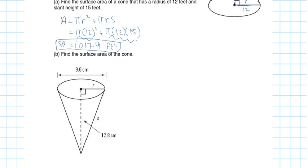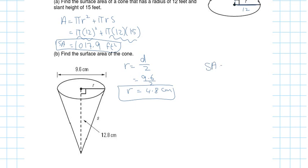Now find the surface area of this cone. In this case they give you the diameter, not the radius. So to find the radius, divide 9.6 by 2, which gives 4.8 centimeters. Then check — do I have s, the slanted height? No, I don't.